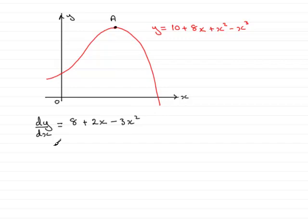So at A we know that the gradient, that's dy/dx, is going to equal 0. Therefore we have 8 plus 2x minus 3x squared must equal 0.